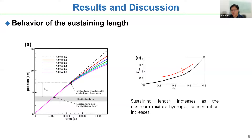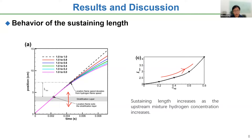There is a clear trend: when the hydrogen concentration on the lower-reactivity side increases, the sustaining length also increases. The reason is simple: if the hydrogen concentration on the lower-reactivity side increases, we have a lower reactivity difference between the two sides of the stratification layer. With a smaller difference, the flame experiences a smaller change in environment, and therefore it can sustain its original flame speed for a longer distance. We want to understand why, even when the flame enters the lower-reactivity side, it can still keep the high flame speed.